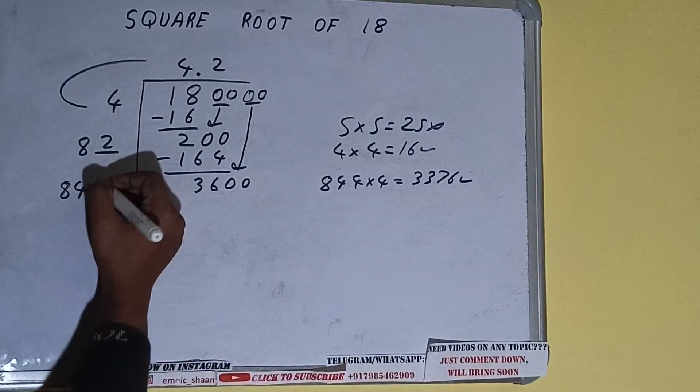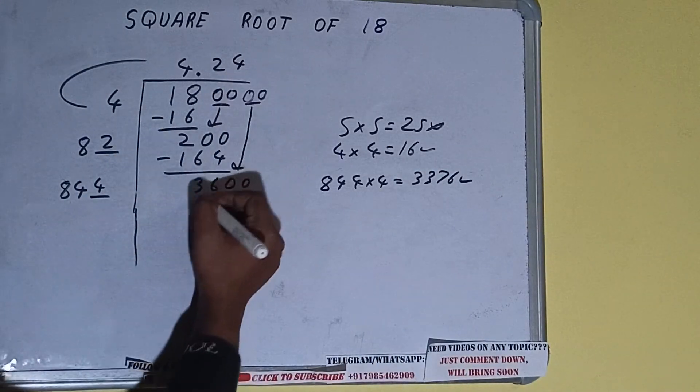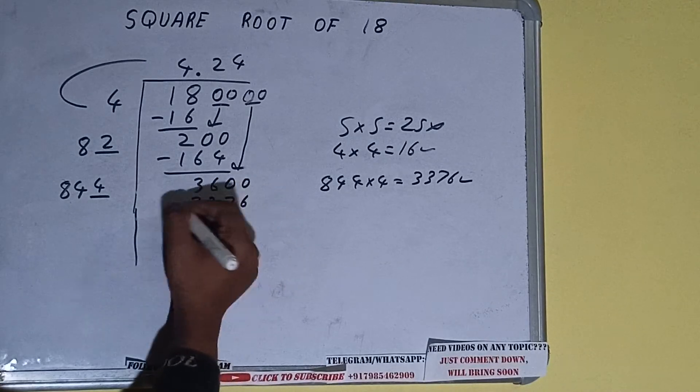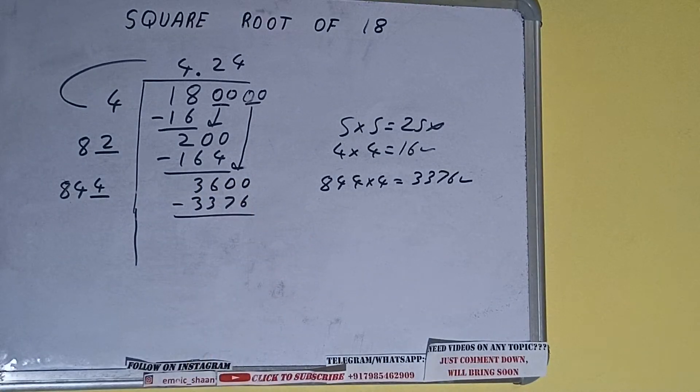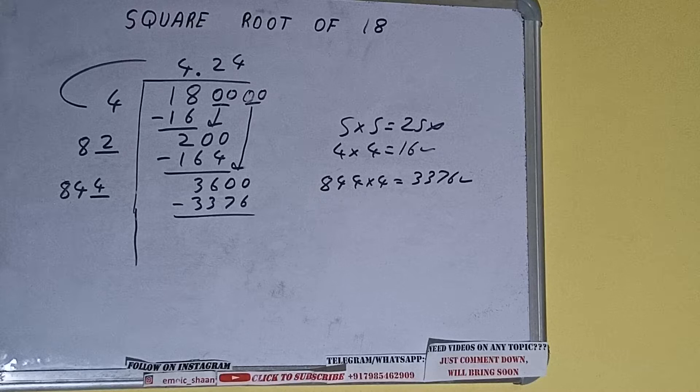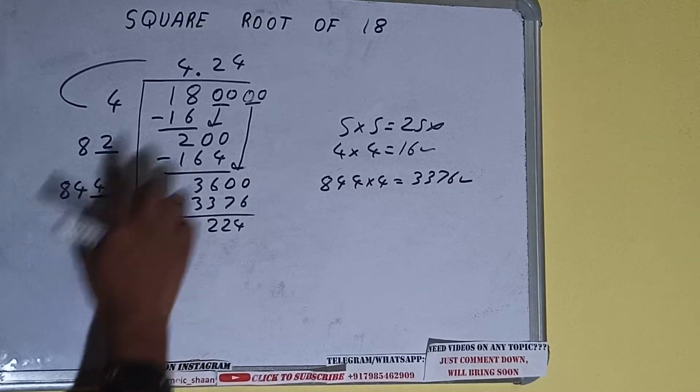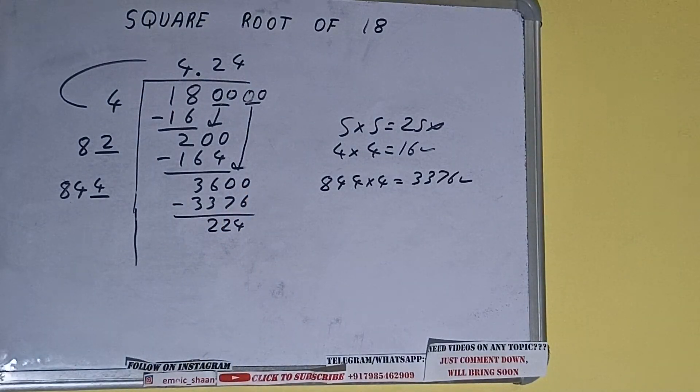So 4 here and 4 here, 3376. Subtract it and 224 will be left. Now 844 into 4 we did, so add both. 844 plus 4 will be 848 and 1 digit extra.